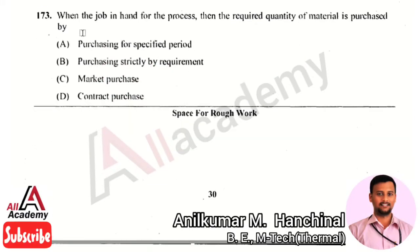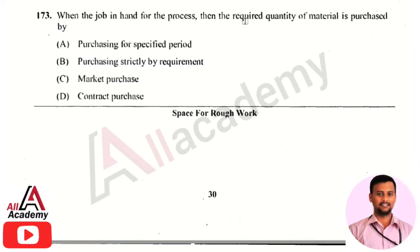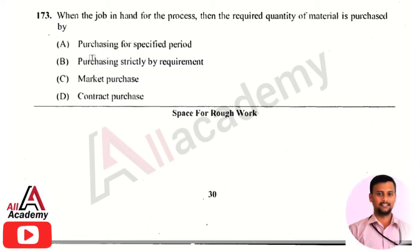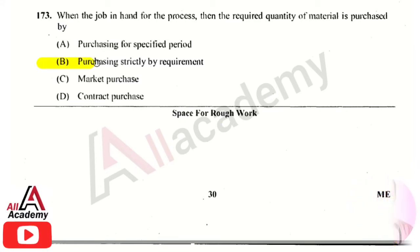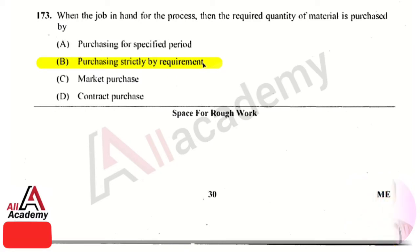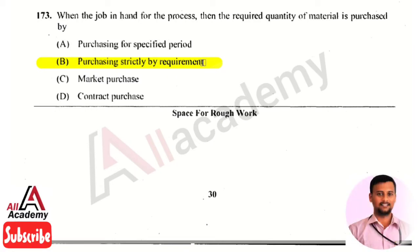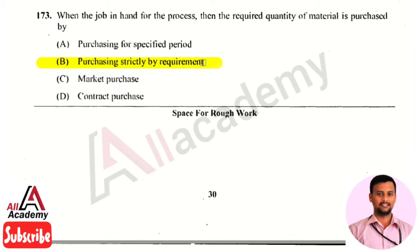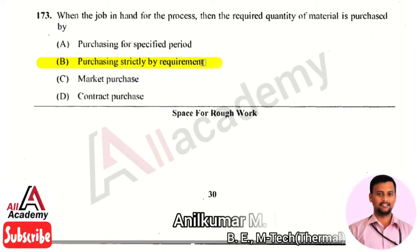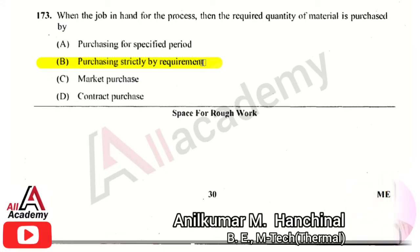The next question is: when the job is in hand for the process, the required quantity of material is purchased by? The right answer is option 2, purchasing strictly by requirement. When a job is in hand, the required quantity of material is purchased strictly by requirement — meaning purchasing is done based on actual need.